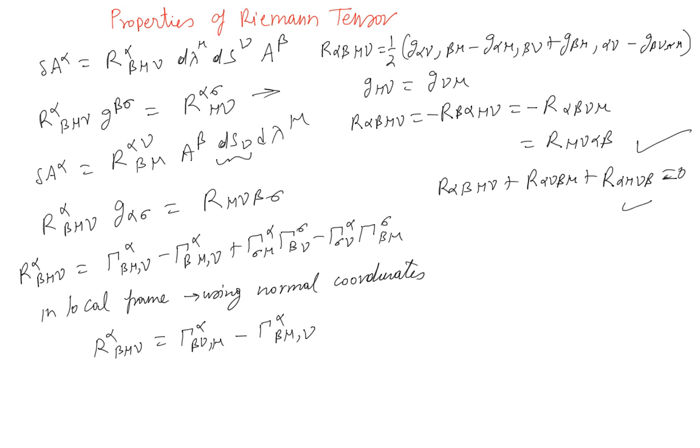For four-dimensional space, three dimensions space and one dimension time, you can put four four four four, which means R will actually have 256 components. But using these two equations or symmetry, you will see that there are just 20 independent components.